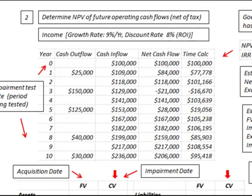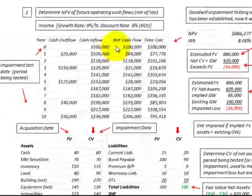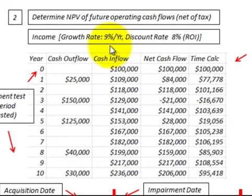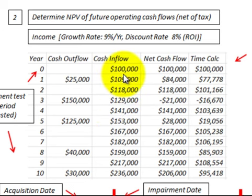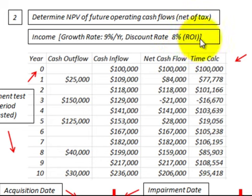The fair value will be based on the income that this business unit generates. To calculate the fair value of this business unit based on the income it's generating, we have to determine the net present value of the future operating cash flows net of tax for this business unit. What I've shown here is a projection for the next ten years of the cash outflows or investments we have to make, and then the cash inflows that these investments are generating. We discounted this net cash flow back using a discount rate of 8% required for this investment, back to year zero.